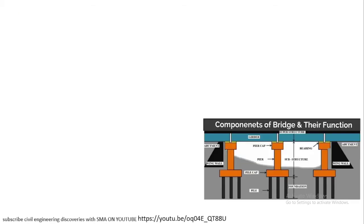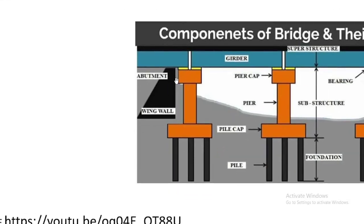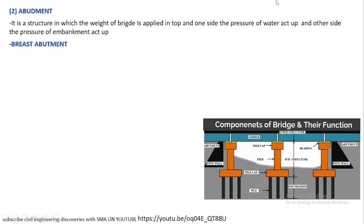Abutment is basically a structure on which the weight of the bridge is applied at the top. One side has active water pressure on it and the other side has the pressure of the embankment. Looking at the diagram, the abutment is shown with the girder above it, water on the right side, and embankment or approach zone on the left side.